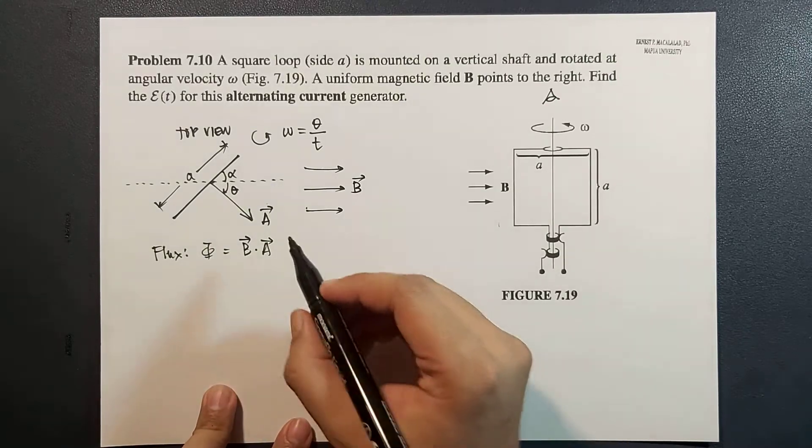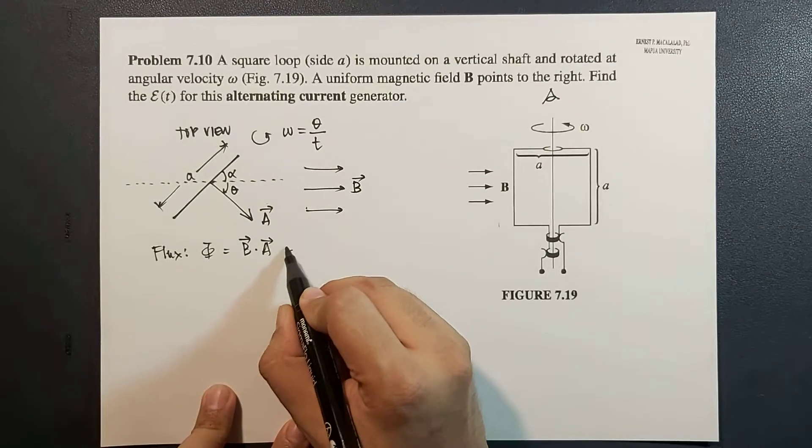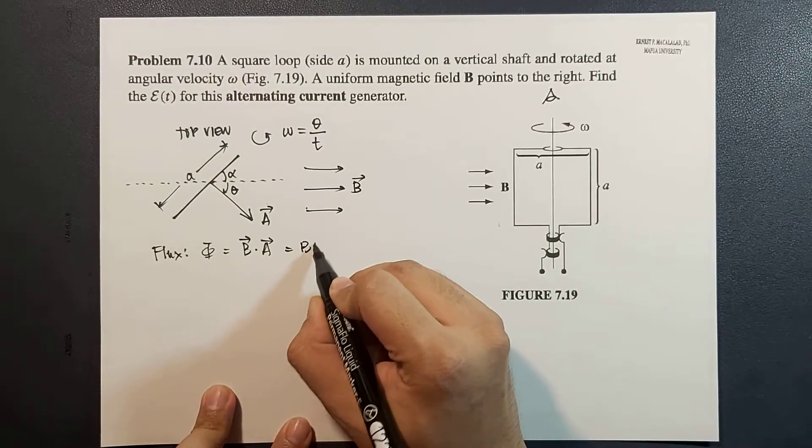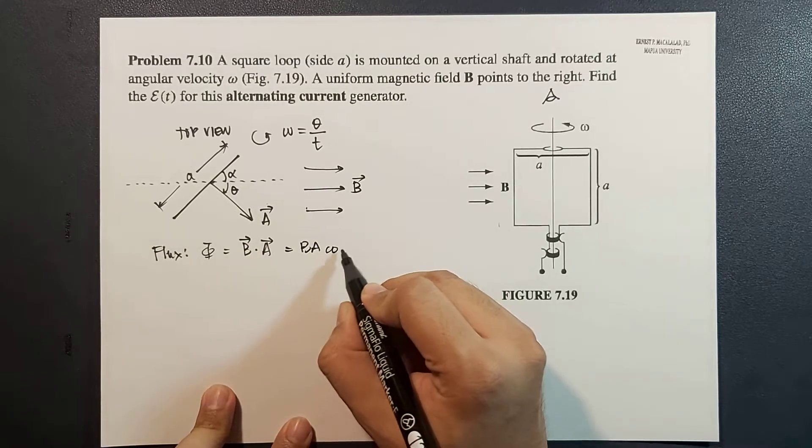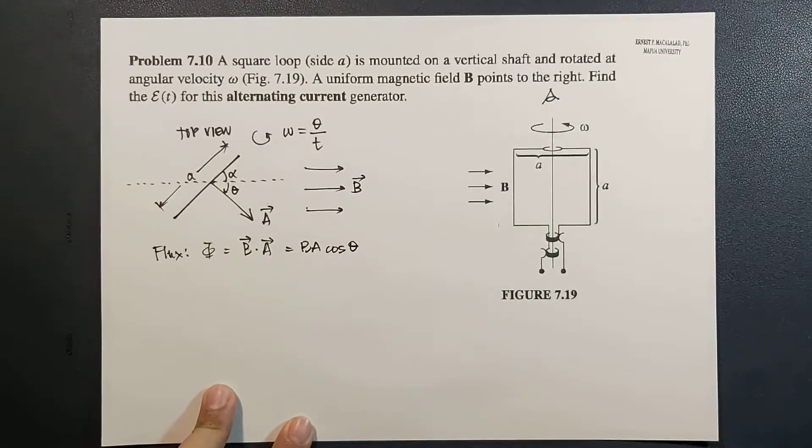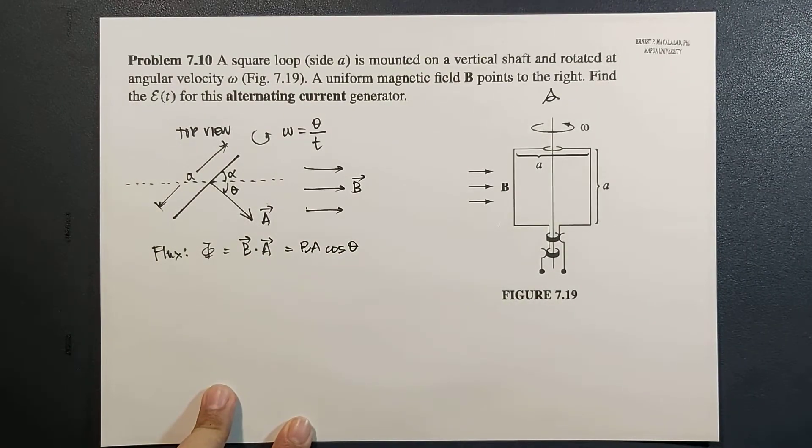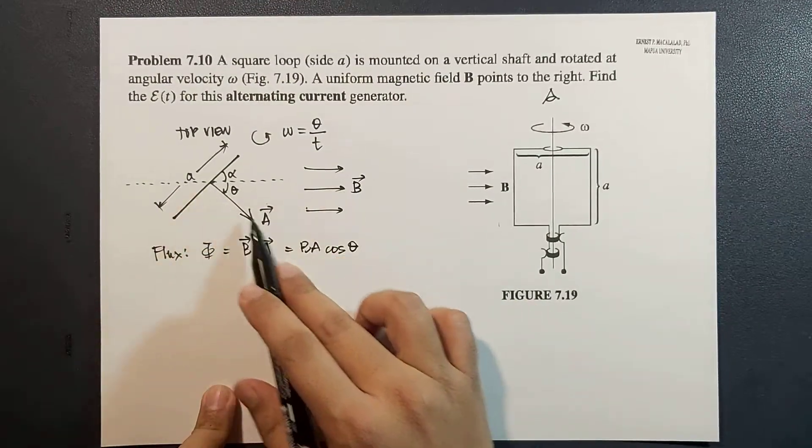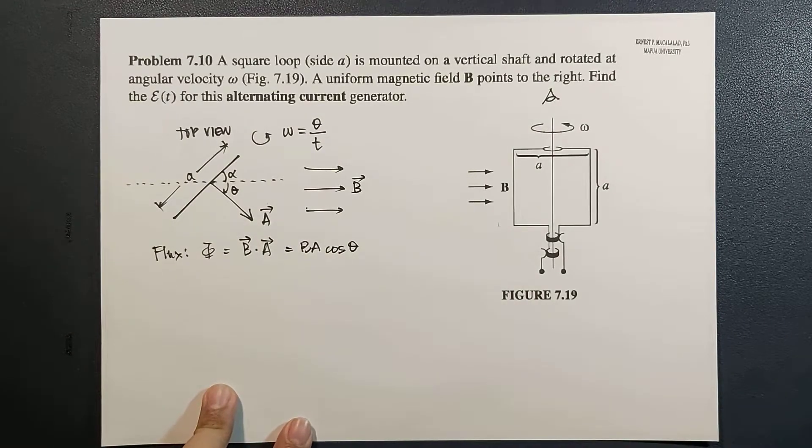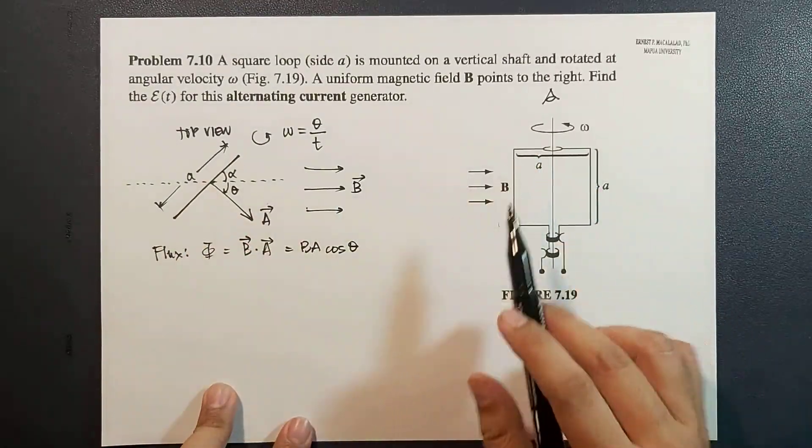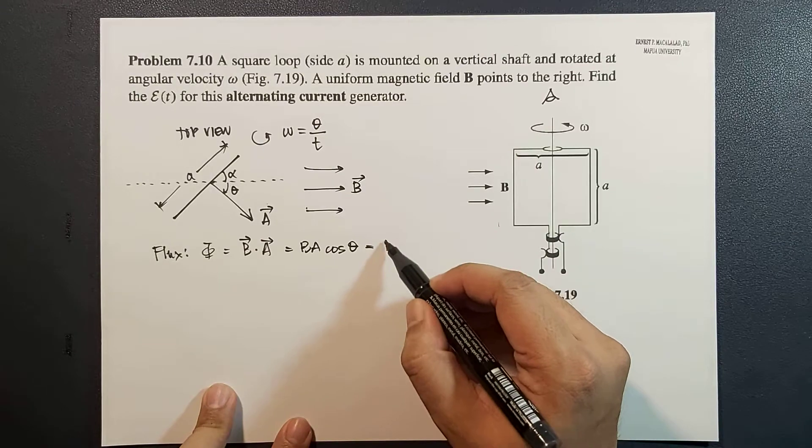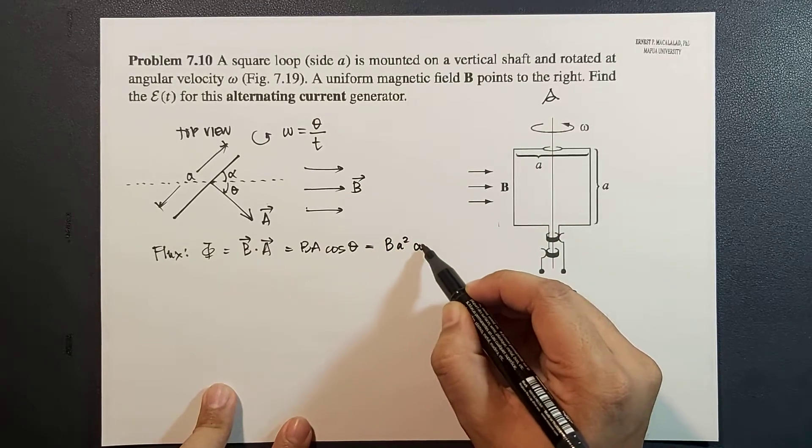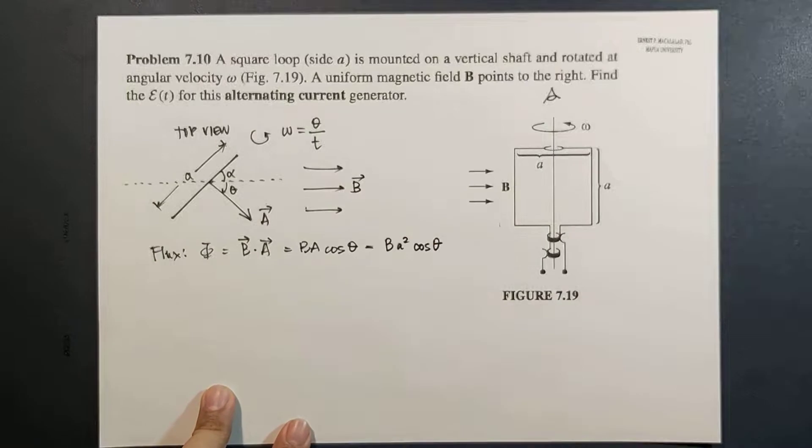So by definition of the dot product, this is equal to B A cosine theta, where theta is the angle between B and A. And the area of your square loop would be small a squared, so this is B a squared cosine theta.